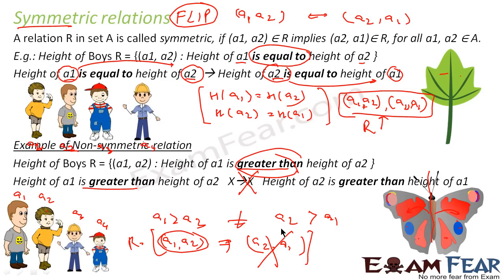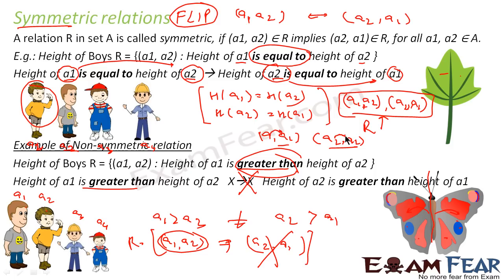For symmetric relation, you are dealing with two objects and flipping them. Please note: in reflexive relation, you talk about only one element — pairs like (a1, a1), (a2, a2), (a3, a3) — they are mirror images of a single object. But in symmetric relation, if you flip (a1, a2), you get (a2, a1), and that flipped pair must also be in the relation. If (a1, a2) is part of the relation, then (a2, a1) must also be part of the relation for it to be symmetric.